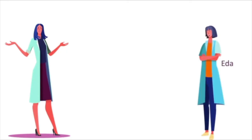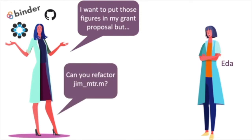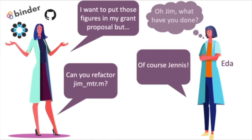Six months later, Professor Janice collected more MTR data and decided to put together a grant application for this project. She would like to add Jim's figures to the grant application, but also make it reproducible with code on GitHub, data on OSF, and results in Binder. After looking at Jim's code she gives up and asks master student Eda to refactor Jim's code and make it more open science-friendly. Eda happily takes on the task but when she looks at the code, she says 'Oh Jim, what have you done?'